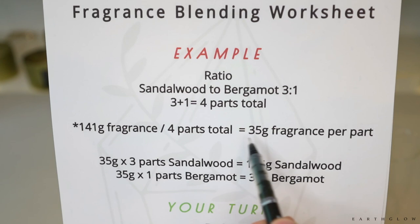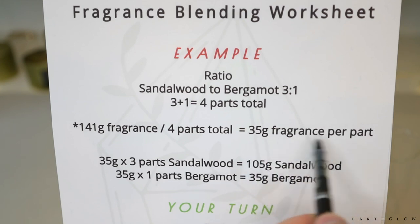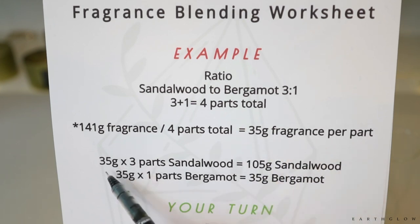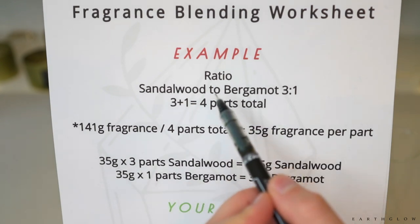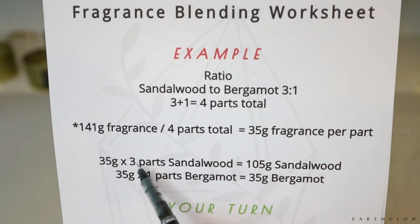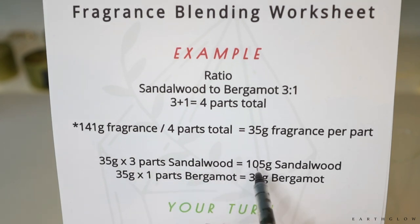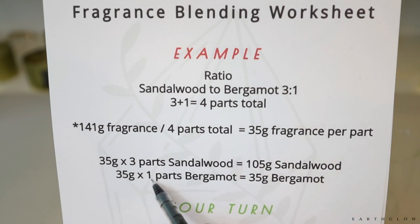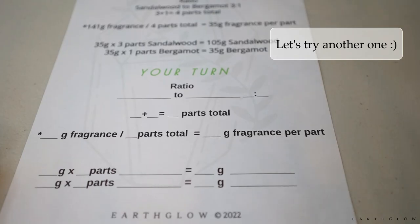This 35 grams of fragrance per part is a really special number. To get three parts of sandalwood, I'm just going to multiply it by three — 35 times three gives you 105 grams of sandalwood. And then to get my one part of bergamot, I multiply it by one, which is just 35 grams of bergamot.